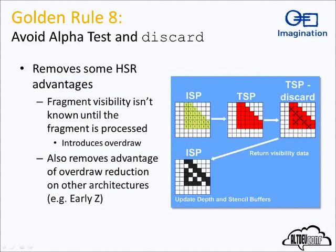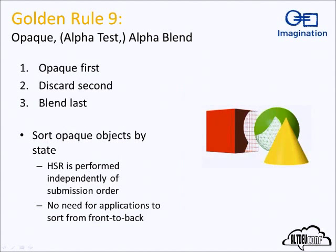Rule eight: avoid alpha tests and discard — this is especially true for PowerVR. It removes some of the benefit of our hidden surface removal, because we can only determine if a fragment is visible at fragment processing time, so we have to push stuff back up the pipeline. Friends don't let friends use alpha test. Rule nine — specific to PowerVR: render all your opaque geometry first, then any discard or alpha-test geometry second, then blended geometry last. That means we can process it most efficiently.